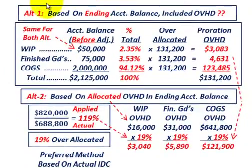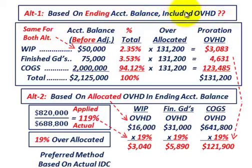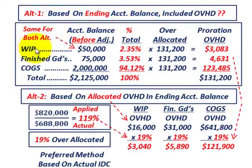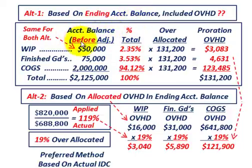Now let's look at two alternatives for adjusting for this over-allocation. Our first alternative is going to be based on the ending account balance. The accounts that we have to make adjustments to would be work in process, finished goods, and cost of goods sold.